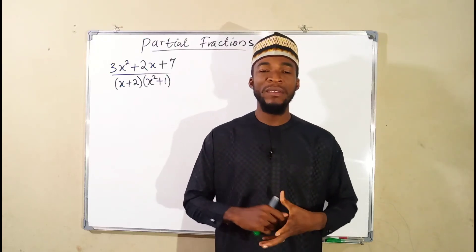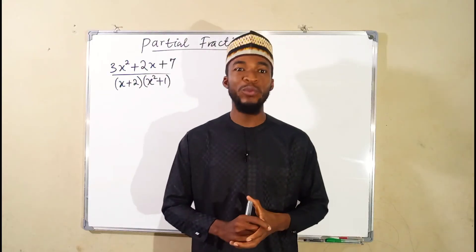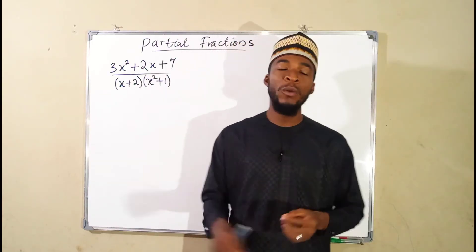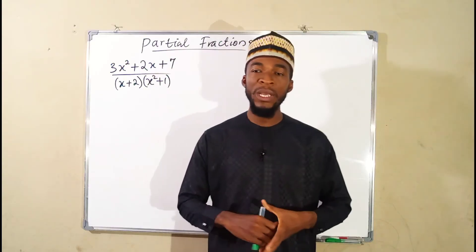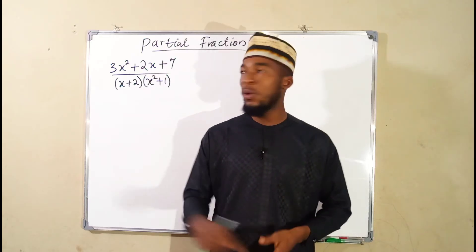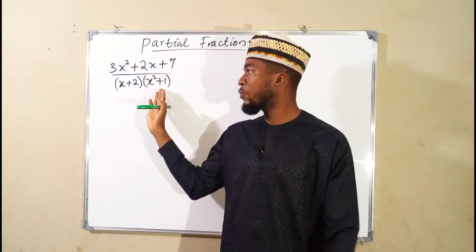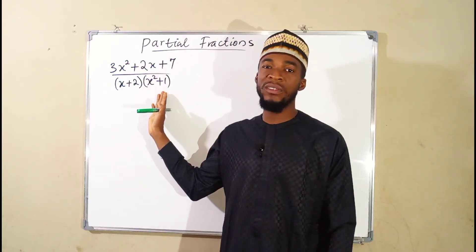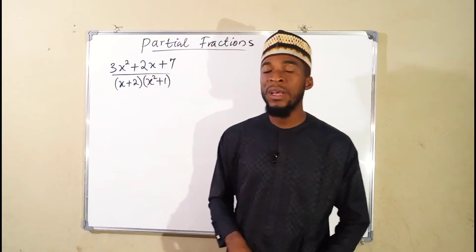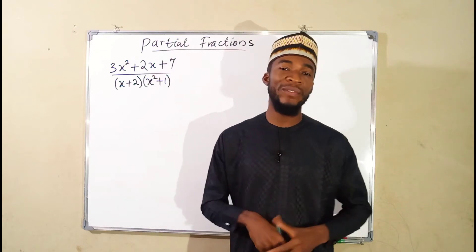Hello, good morning viewers. Still on how to dissolve compound fractions into partial fractions. I have another problem here which falls under the first category. You can see we have two different factors under the denominator — one is a linear factor and the other one is a quadratic factor. Since this quadratic factor cannot be factorized, let me show you how to dissolve this into partial fractions.